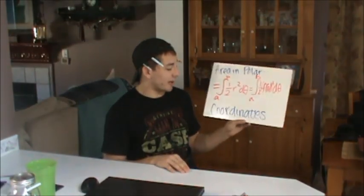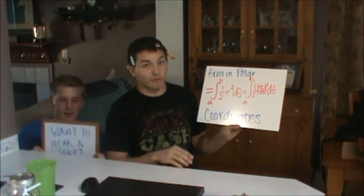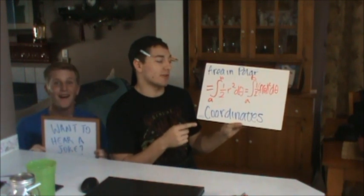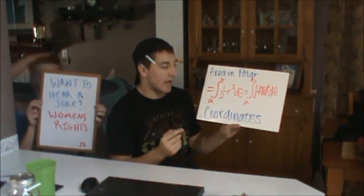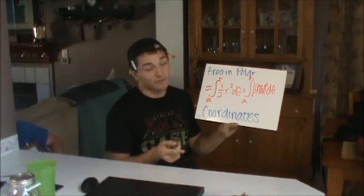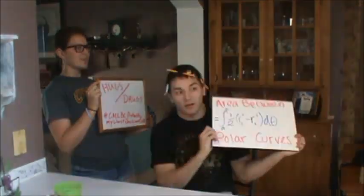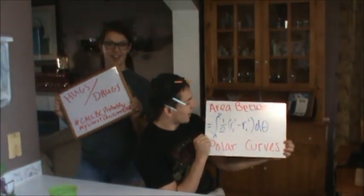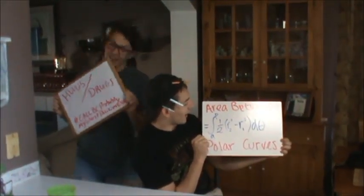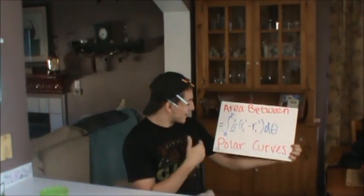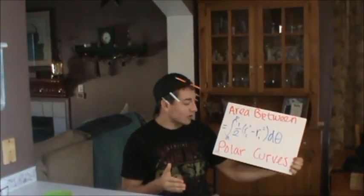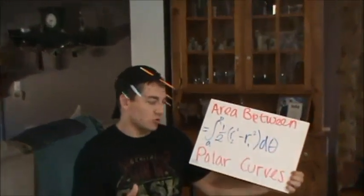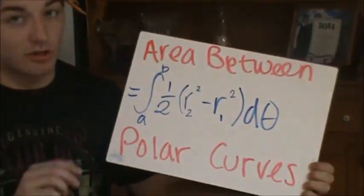Area in polar coordinates is the integral of a to b of one-half r squared d-theta, or it could be the integral of a to b of one-half f(theta) squared d-theta. Area between polar curves is the integral of a to b of one-half of r₂ squared minus r₁ squared d-theta.